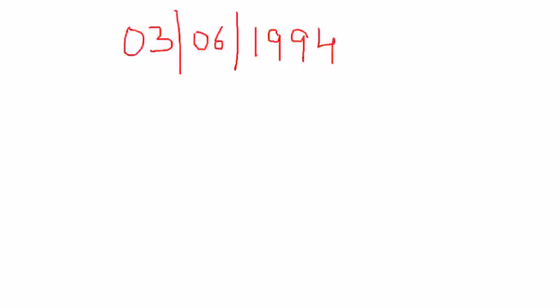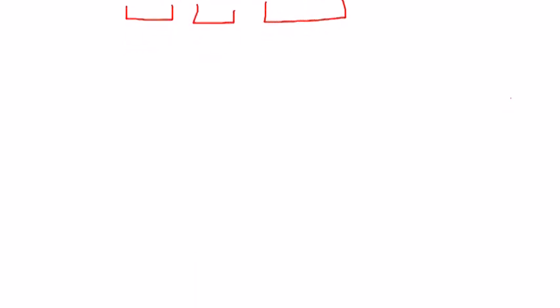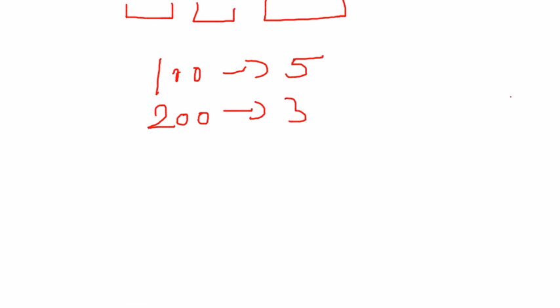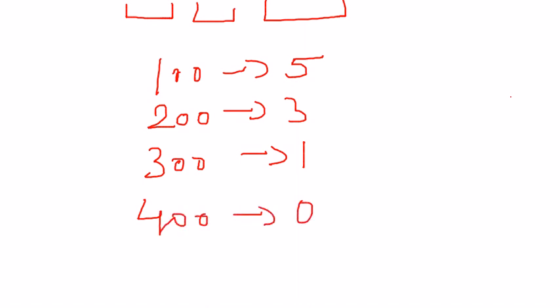Now starting with this video — as you might remember, I asked you to memorize that for 100 years we have 5 odd days, for 200 years we have 3 odd days, for 300 years we have 1 odd day, and for 400 years we have 0 odd days. This pattern repeats itself: for 800 years we have 0 odd days, for 1200 years also 0 odd days, and for 1600 years there would be 0 odd days.